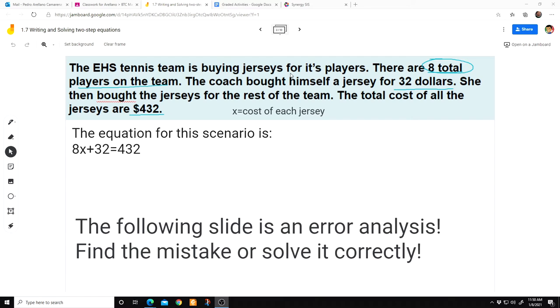The EHS tennis team is buying jerseys for its players. There are eight total players on the team. The coach bought himself a jersey for $32. She then bought the jerseys for the rest of the team. The total cost of the jerseys are $432.